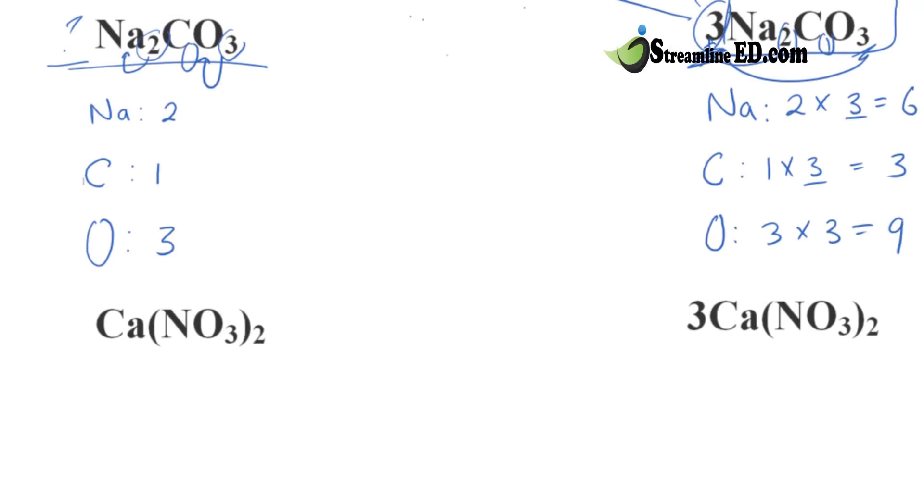And that's how the coefficients tell you the multiple of how many of that molecule. Now, let's look at this case where we have parentheses right here. That 2 right at the parentheses indicates there are 2 of this whole thing right here. 2 times. So, what we're going to do is this. Let's look at calcium. For calcium, we have nothing here. It's outside the parentheses, so we know it's just 1.